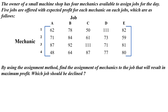The owner of a small machine shop has four mechanics available to assign jobs for the day. Five jobs are offered with expected profit for each mechanic on each job. Using the assignment method, find the assignment of mechanics to jobs that will result in maximum profit, and identify which job should be declined. Here a profit matrix is given and we have to maximize the total profit by optimal assignment.